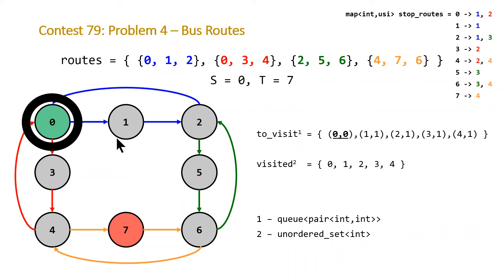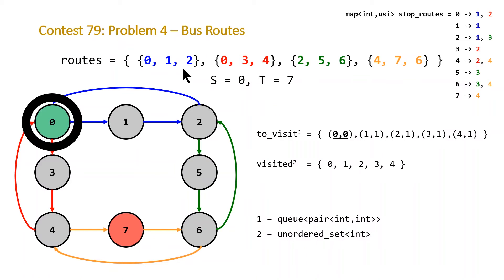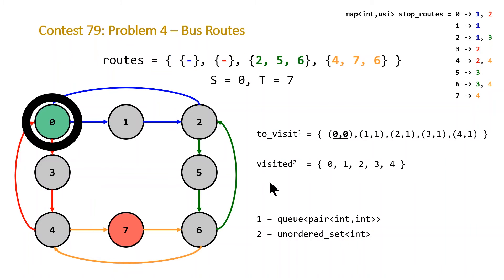Stops 1 and 2 can be reached by going on one bus — the blue bus. Stops 3 and 4 can be reached by going on one bus — the red route. Once we've done this, we pop off stop 0 and, importantly, clear these routes. This ensures that when we later encounter stops already on these routes, we don't process them again. All stops added to the to-visit queue are also inserted into the visited unordered set.